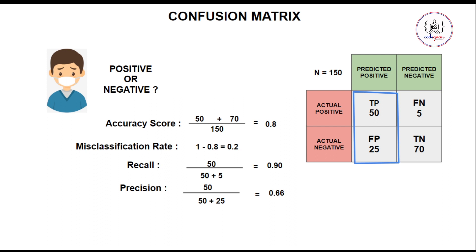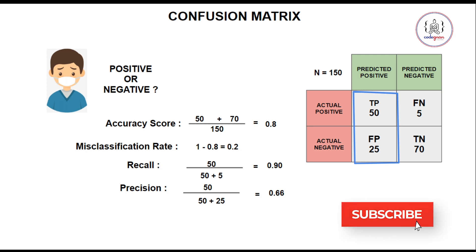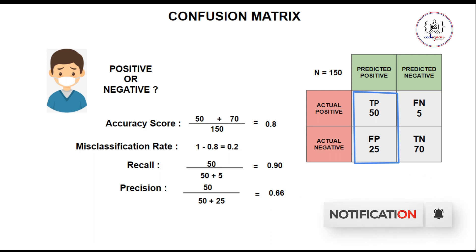I hope you now understand this confusion matrix — how we draw it and how we calculate the different metrics such as accuracy score, recall, precision, and misclassification rate. Thank you for watching this video. For many such videos, subscribe to our YouTube channel and press the bell icon so you will be notified whenever we upload a new video. Thank you.